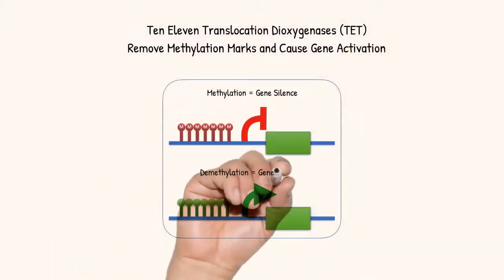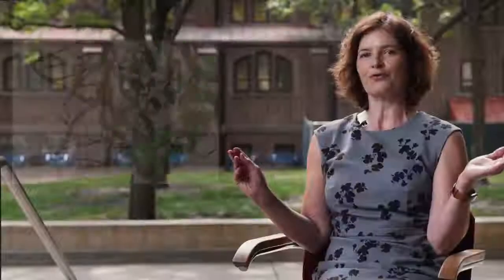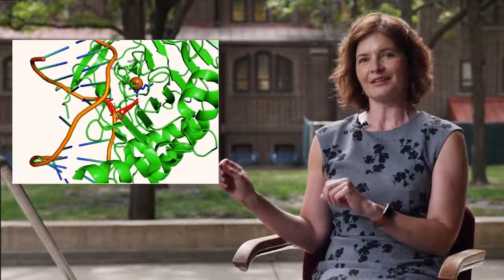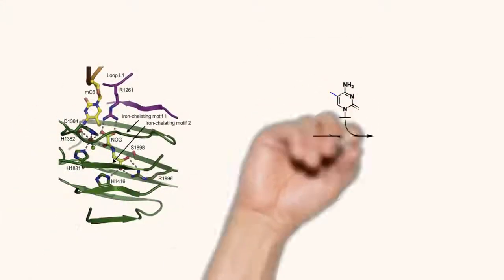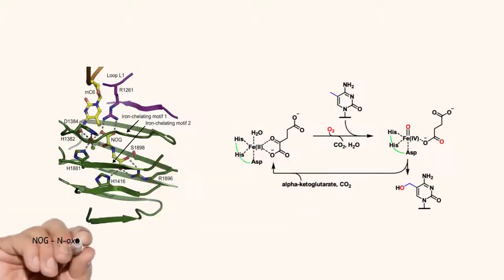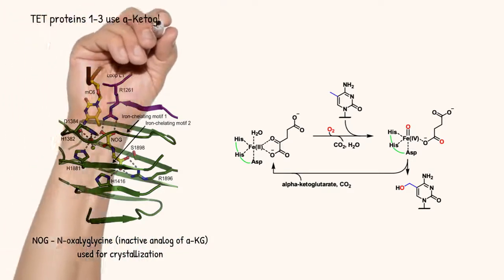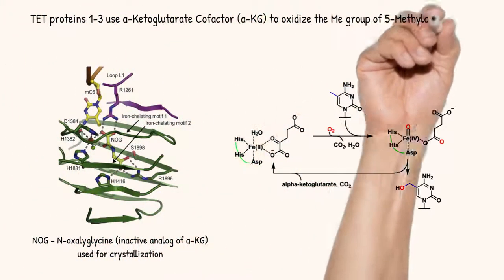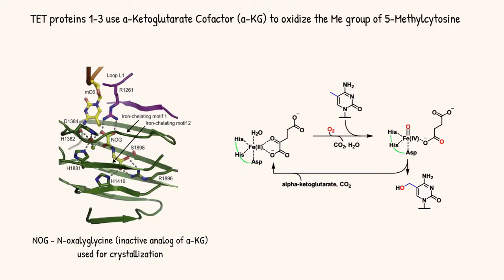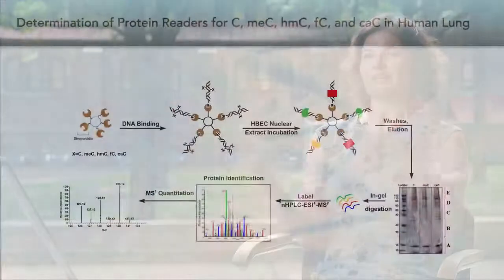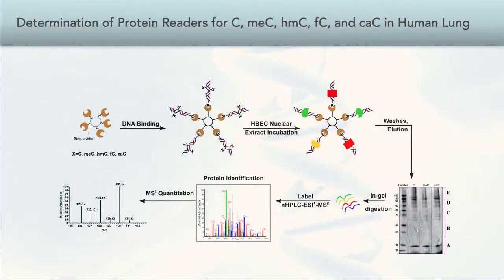We are focusing on TET proteins — there are three of them: TET1, TET2, and TET3. These are metalloproteins that use an alpha-ketoglutarate cofactor to oxidize the methyl groups in DNA. We want to understand the roles of these oxidized bases in DNA by conducting chemical proteomics experiments to identify specific readers of hydroxymethylated, formylated, and carboxylated cytosines in DNA.